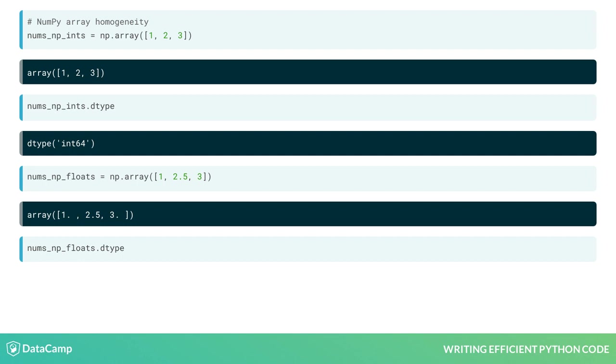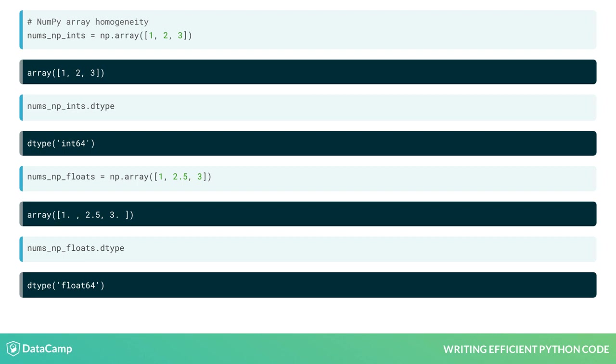Using .dtype, we can verify that the elements in the array are floats. Homogeneity allows NumPy arrays to be more efficient and faster than Python lists. Requiring all elements be the same type eliminates the overhead needed for data type checking.